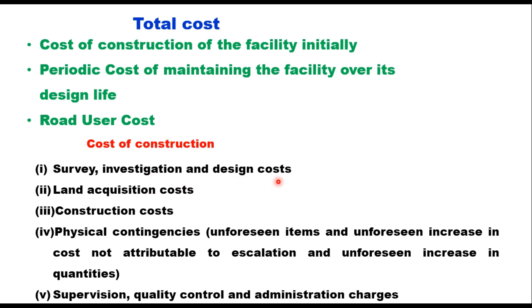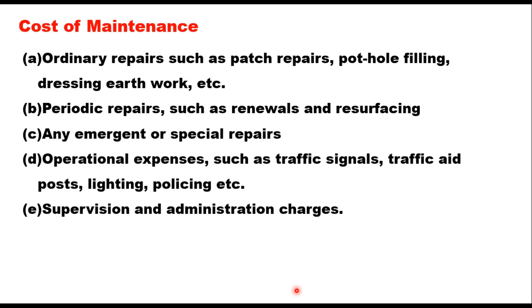Cost of construction includes survey, investigation and design costs, land acquisition cost, construction cost, physical contingencies like unforeseen items and unforeseen increase in cost not attributable to escalation, unforeseen increase in quantities, and supervision, quality control and administration charges. Cost of maintenance includes ordinary repairs such as patch repair, pothole filling, dressing work, etc.